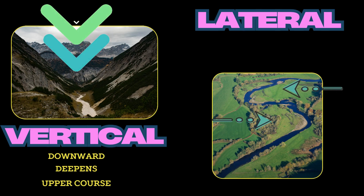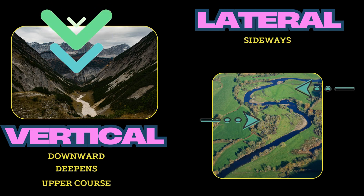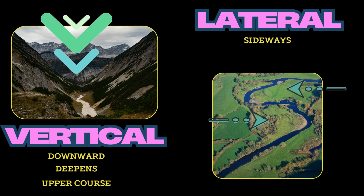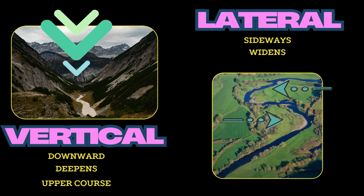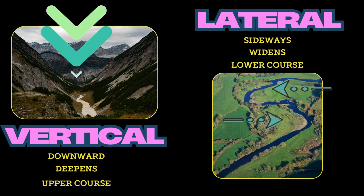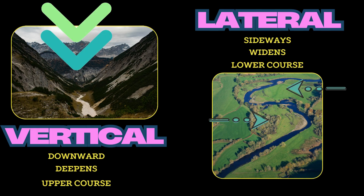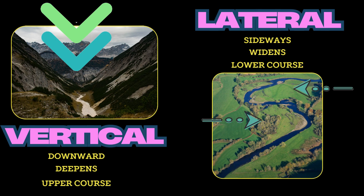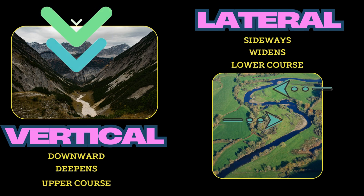Lateral erosion, or side-to-side erosion, tends to happen and widen the river valley and channel when the river moves into the middle and lower course. In this area, you get the formation of meanders and oxbow lakes. So, lateral erosion is more dominant in the middle and lower courses, while vertical erosion is more dominant in the upper course.